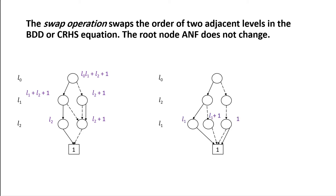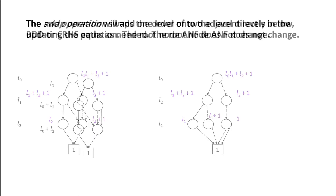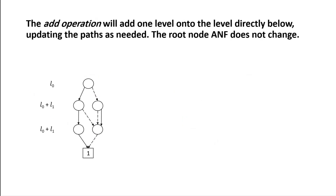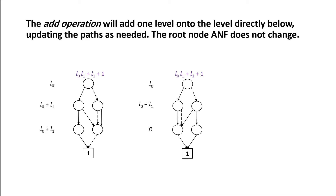The key point is that even though the bottom level ends up with different algebraic normal forms, the root node ends up having the same algebraic normal form — so we have not changed the Boolean equation that the compressed right-hand side equation represents. The second operation is the add operation, which adds one level onto the level directly below it. Again we update the directed acyclic graph as needed, and the Boolean equation associated with the compressed right-hand side equation is not changed.